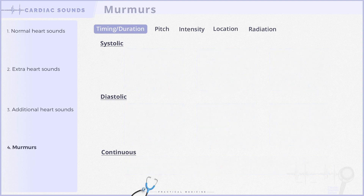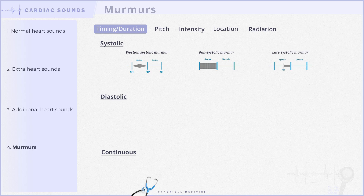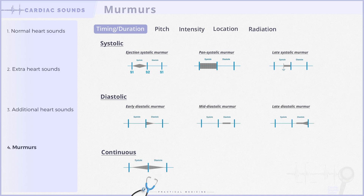To recap, the main types of murmurs encountered during a cardiovascular examination are: ejection systolic, pan-systolic, late systolic, early diastolic, mid-diastolic, late diastolic, and continuous murmurs.